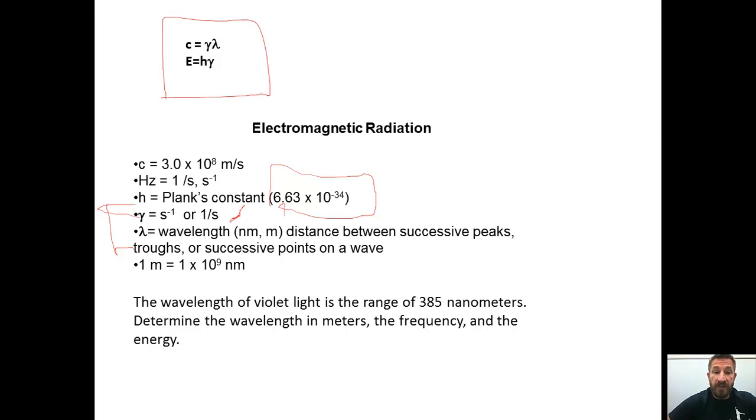We'll also need to do conversion in nanometers before we do this. The problem we're going to do is one where you have the wavelength of violet light, which is in the range of 385 nanometers. We want to calculate the wavelength in meters, the frequency which is 1 over seconds, and then the energy which will be in joules.